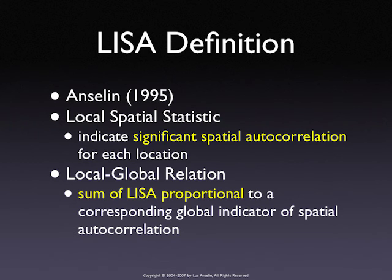Anytime we have a global statistic that can be decomposed, we have a local statistic. Anytime we have this double sum — the sum over i of the sum over j — if we just take the first sum out, then for every i we have a local statistic. And we sum them up to get the global statistic back. It's a very simple principle.